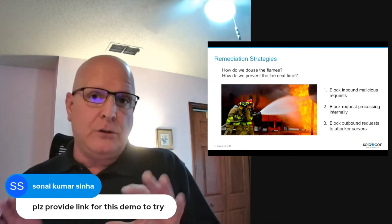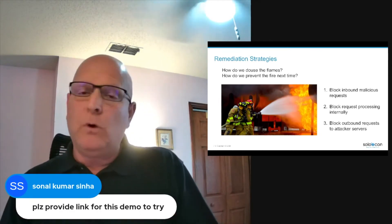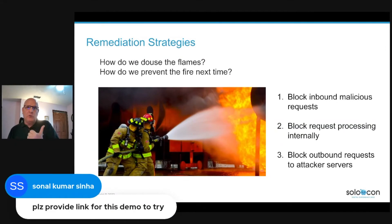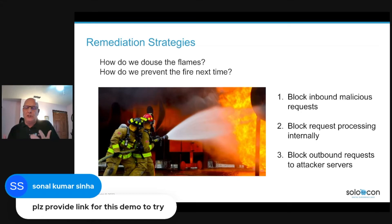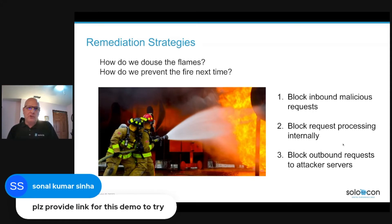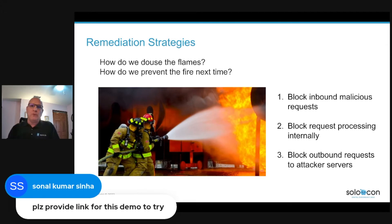At a fundamental level, we have three opportunities to respond to these attacks. Number one, we can intercept the malicious request when it enters our system — this leads us to technologies like web application firewall. Number two, we can interrupt the processing of malicious requests in our application servers, by patching Log4j or reconfiguring it to disallow remote lookups. Number three, we can block the outbound requests that attempt to reach the attacker's server.